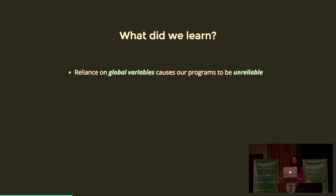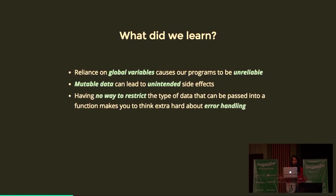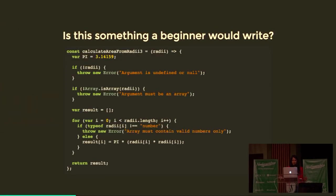What did we learn? One: reliance on global variables causes our programs to be unreliable. Two: mutable data can lead to unintended side effects — because we were able to mutate the radii, we did. Three: having no way to restrict the type of data passed into a function makes us think extra hard about error handling. And type coercion — like undefined squared being NaN or string squared being zero — makes it hard to protect the behavior of our code. Realistically, if you look at the finished version, is this something a beginner would write? I would have just written the original one without thinking of all these edge cases.